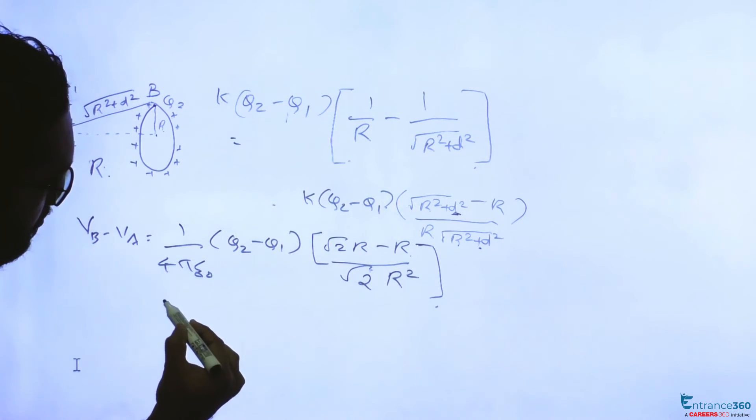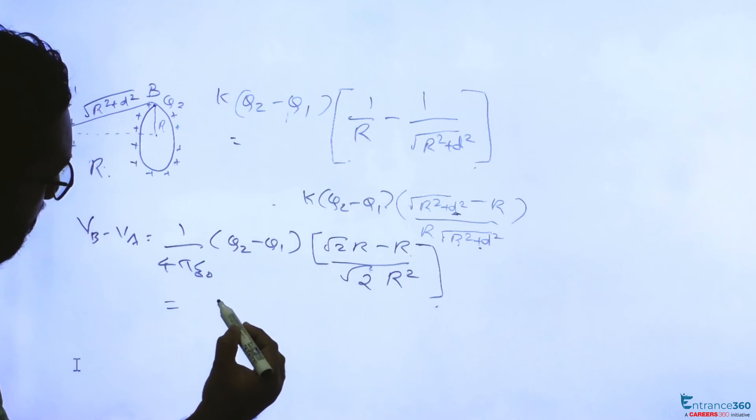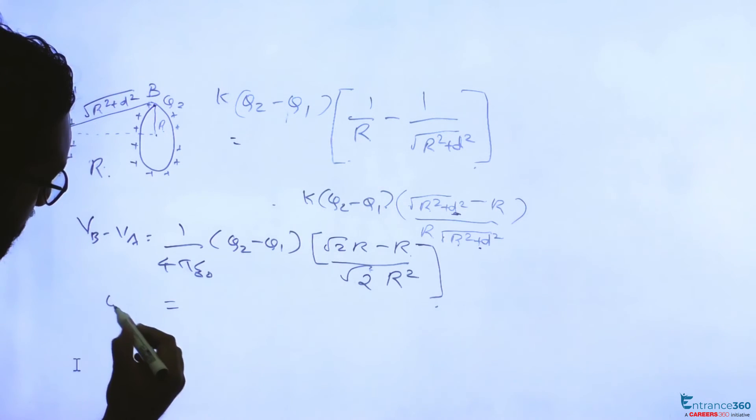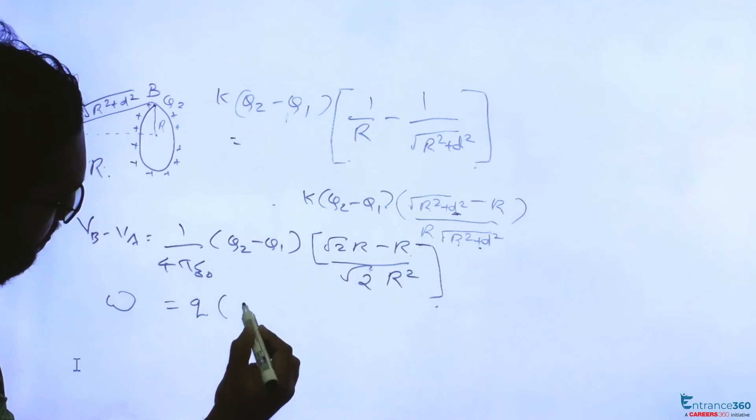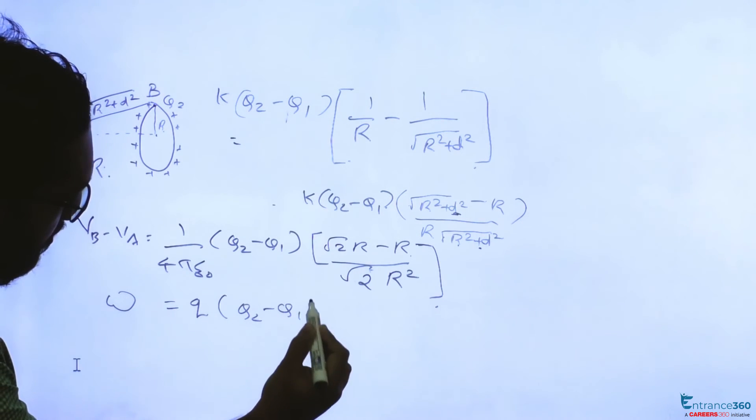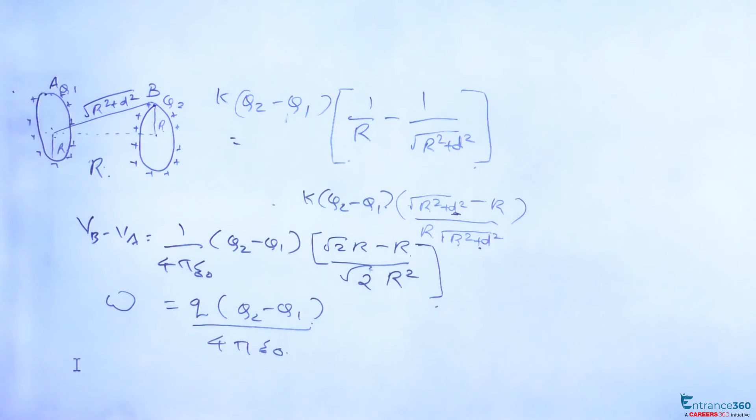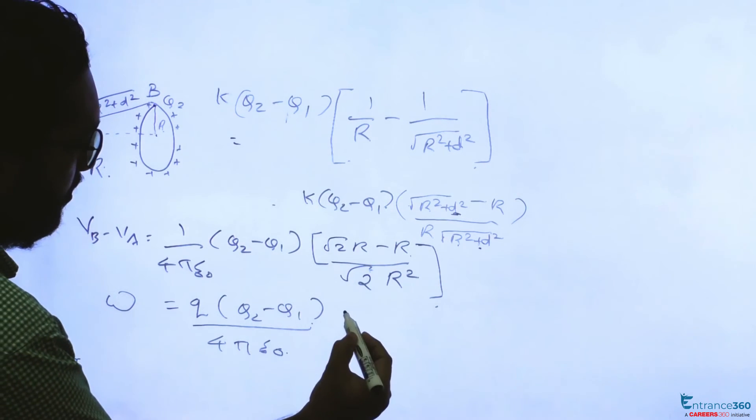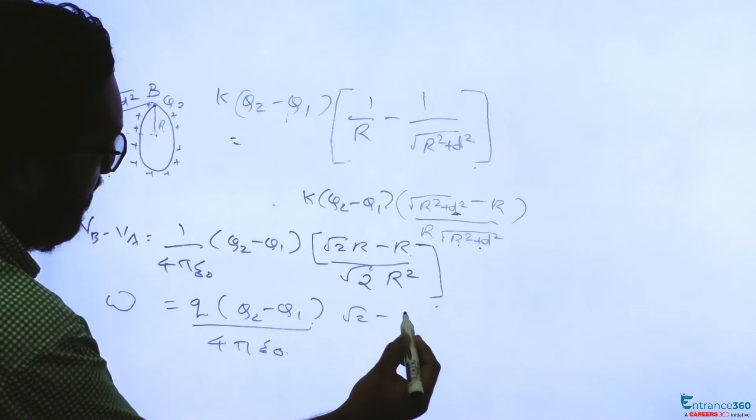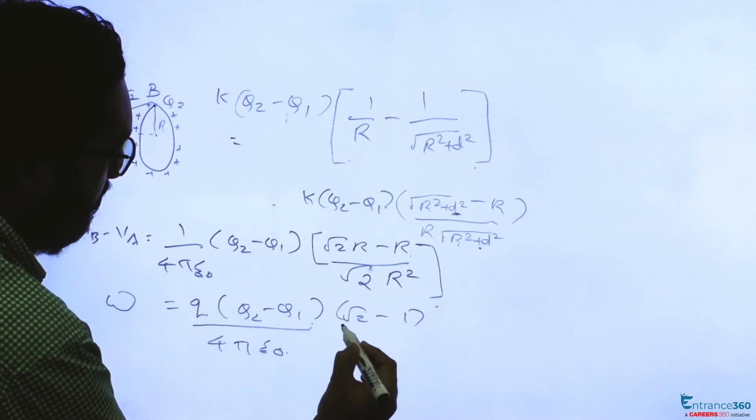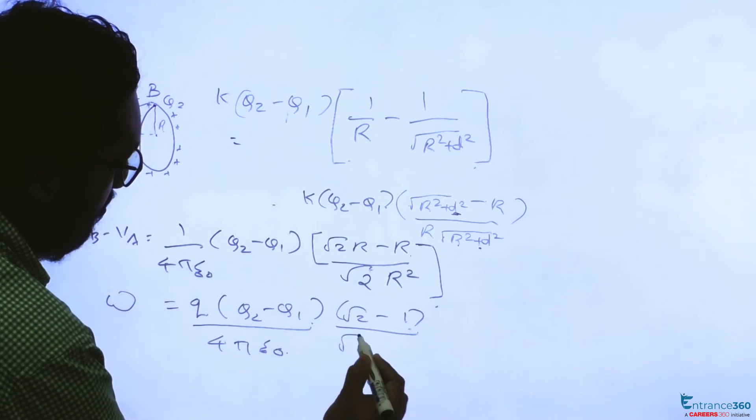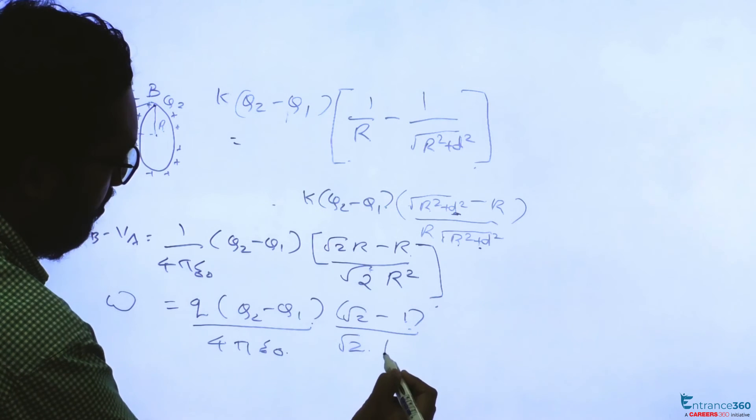Now work done is equal to Q into Q2 minus Q1 by 4 pi epsilon 0 into root 2 minus 1 divided by root 2 R.